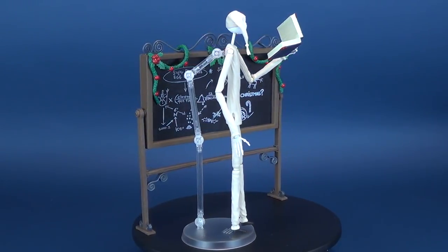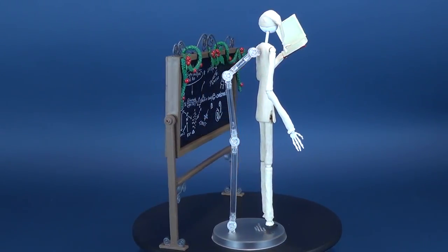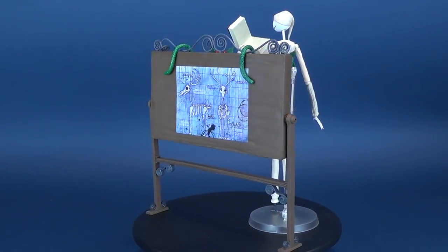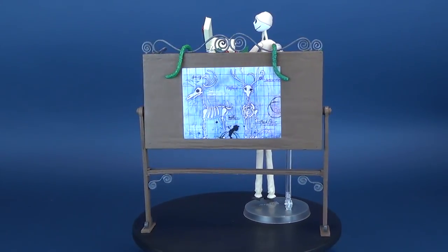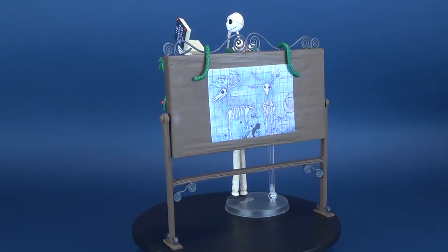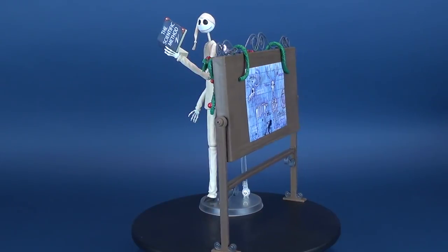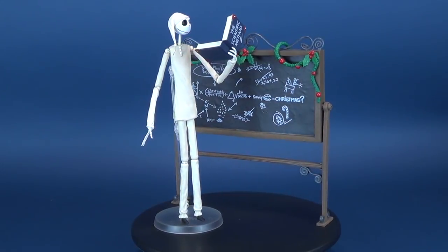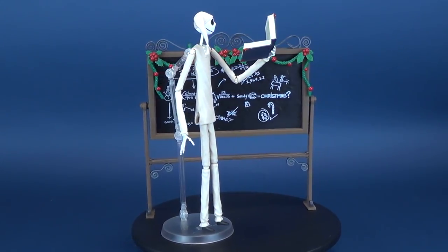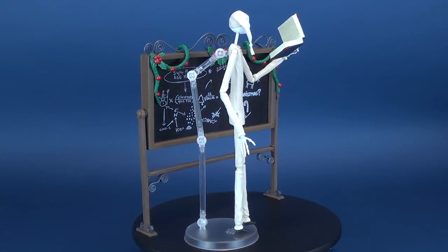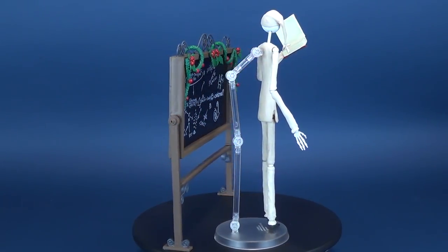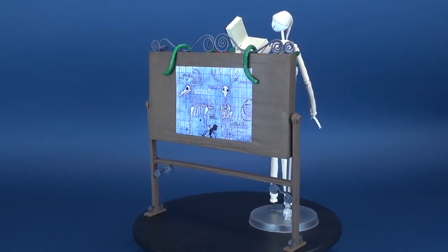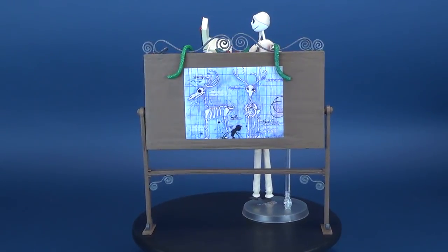After witnessing the glitz and glamour of Christmastown, Jack Skellington returns to Halloweentown with visions of sugar plums dancing in his head. He concocts a plan to put on Christmas his own way using the spooky resources at hand, but it requires a lot of careful planning and scientific experimentation. This deluxe action figure of Pajama Jack features multiple points of articulation and a blackboard diorama. It was sculpted by Dave Cortez.